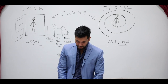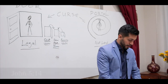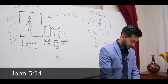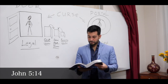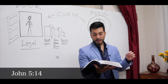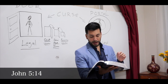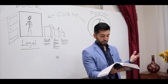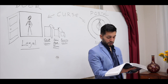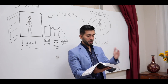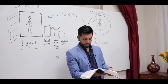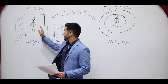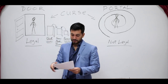In John chapter 5, verse 14 — there's a paralytic man. It says: 'Afterward Jesus found him after he was healed and said to him, See, you have been made well. Sin no more, lest a worse thing come upon you.' What is the worse thing? When the demon brings other demons.